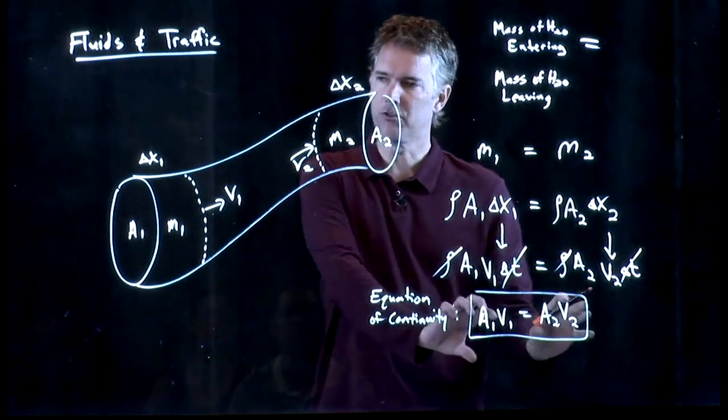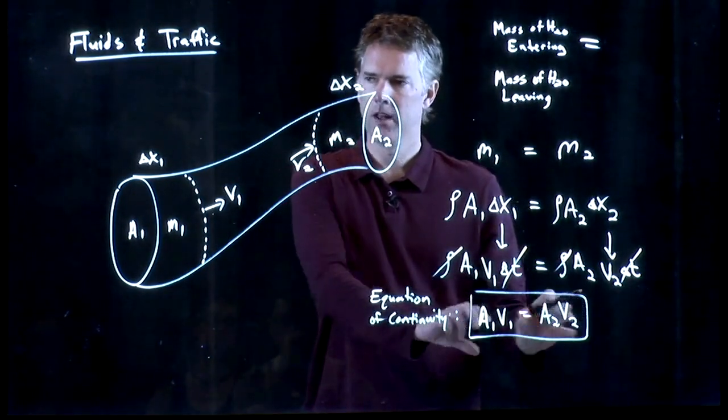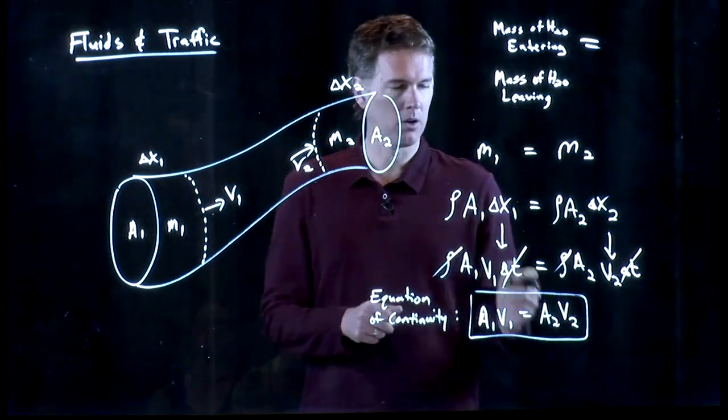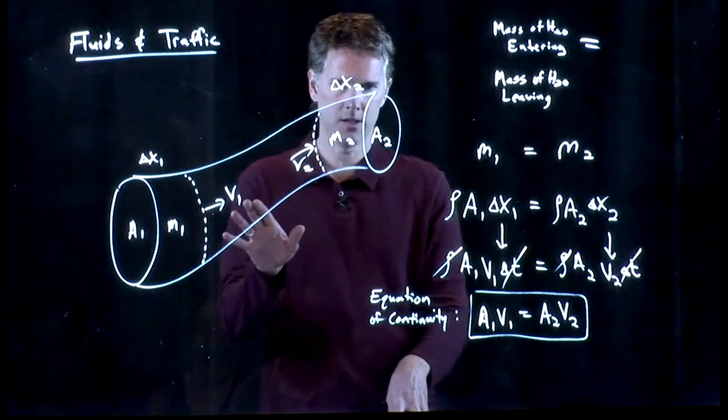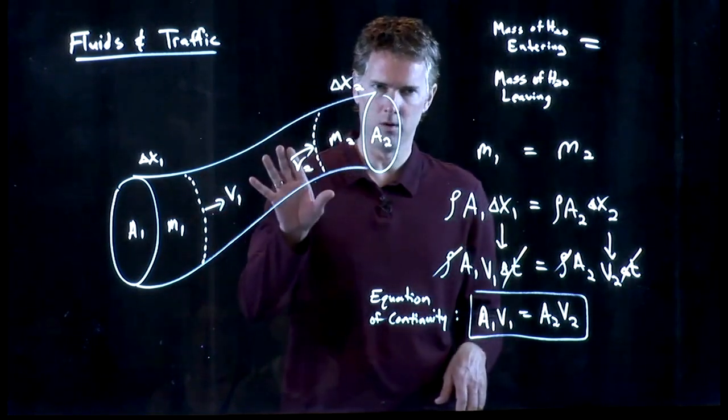And it really means nothing more than the mass is conserved. Water entering has to equal water leaving. If I constrict one of these areas, then the velocity will change according to this equation. And so now you can probably see the analogy between fluid flow and traffic.